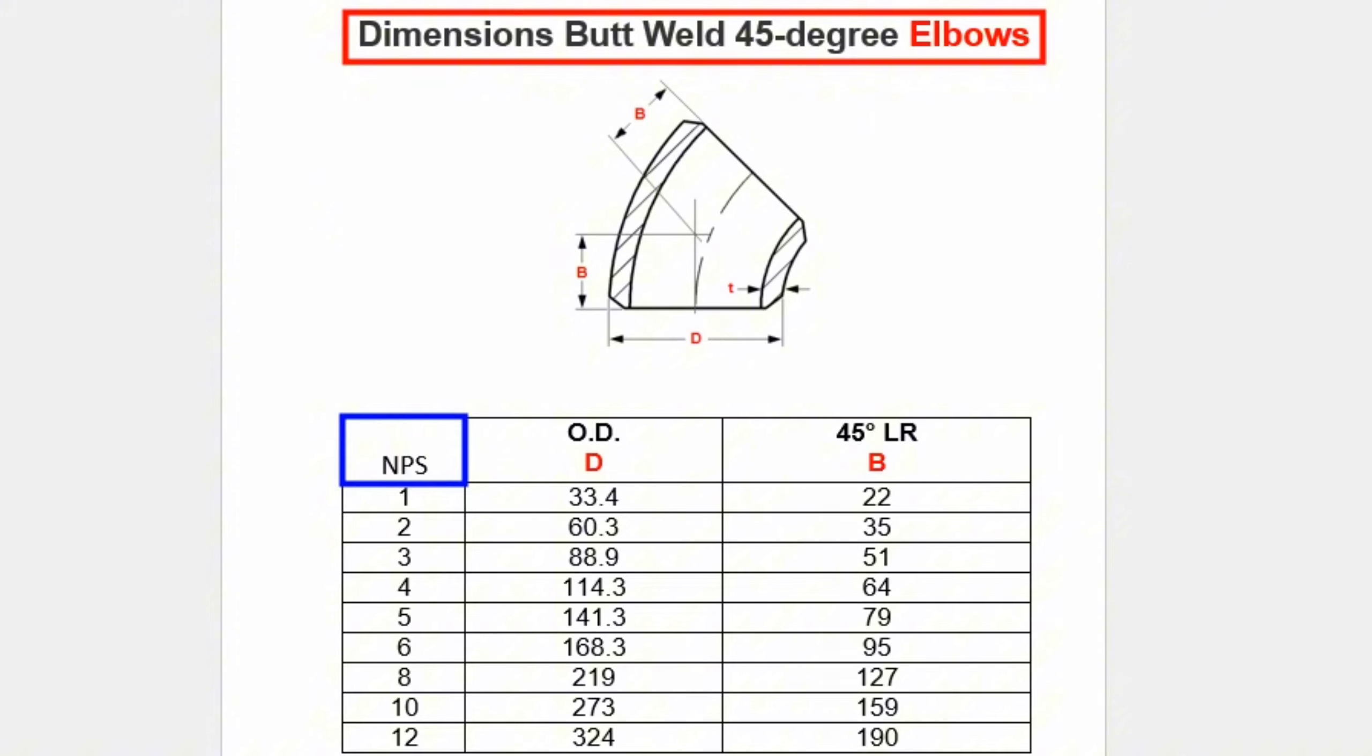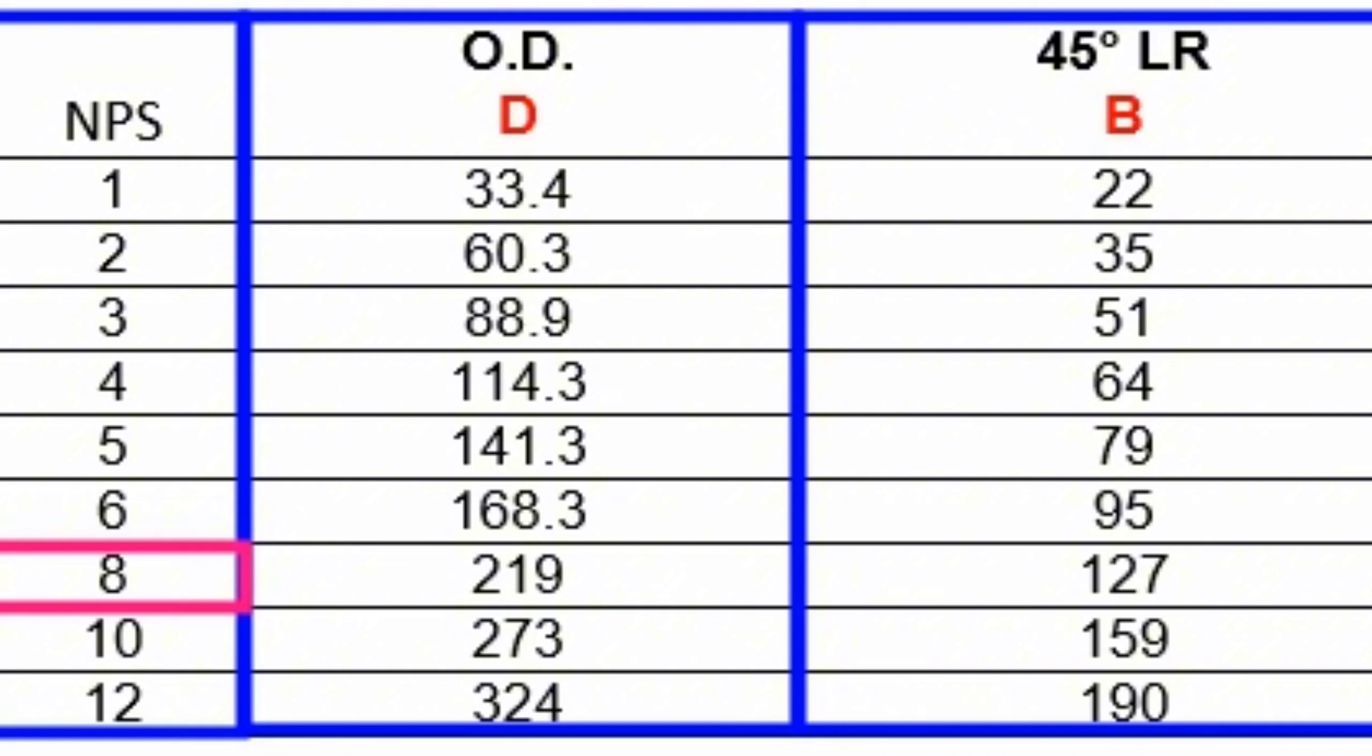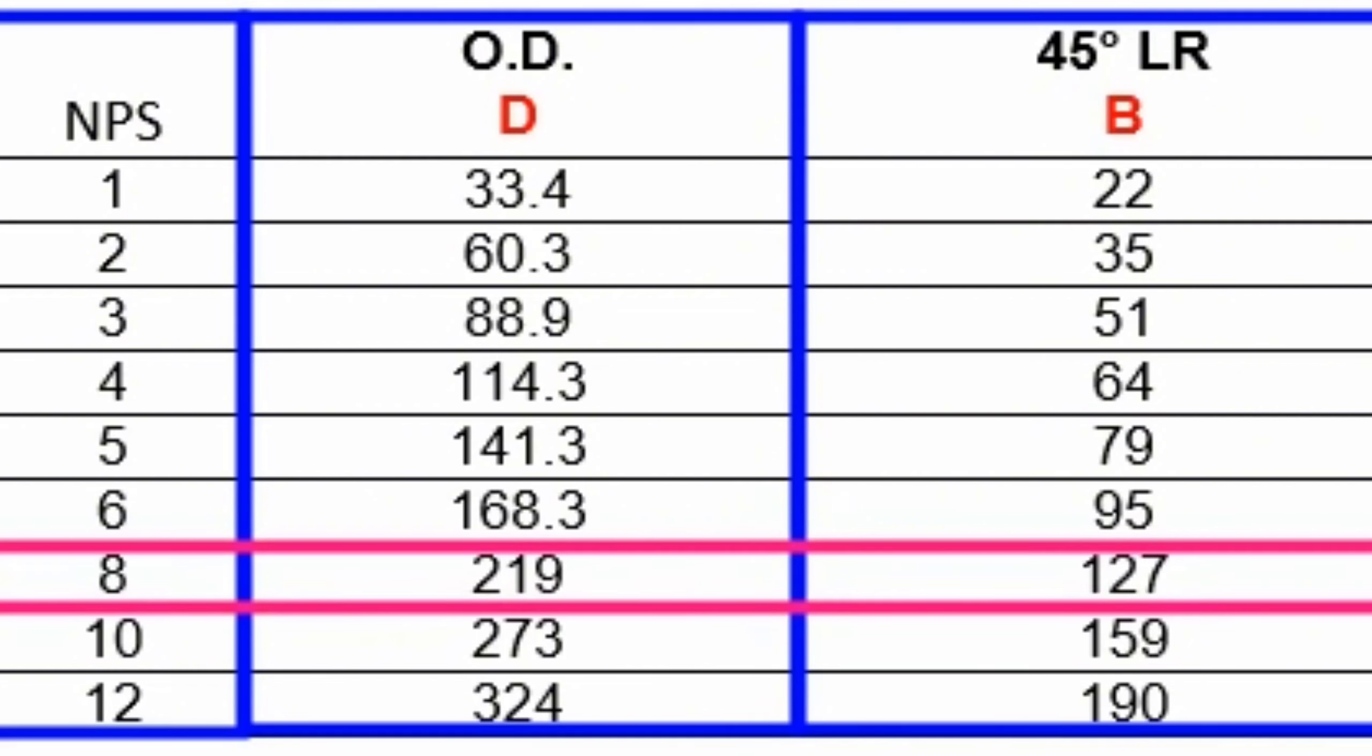The nominal pipe sizes of elbows are shown in the first column of this table. Letter D indicates the outside diameter of the 45-degree elbow. Letters B indicate the center to end dimension. Since the pipeline in our video is 8-inch, we will look at the row written as 8-inch in the NPS column. This table shows that 8-inch butt welded 45-degree elbows have an outside diameter of 219 millimeters and a center to tip dimension of 127 millimeters.